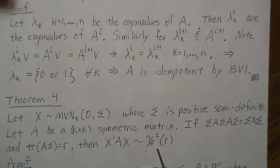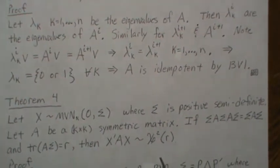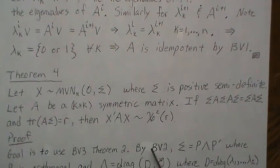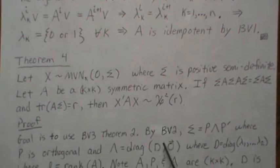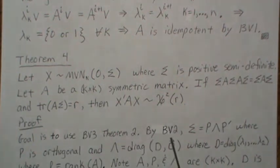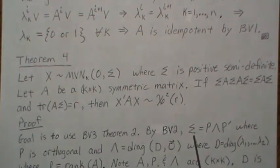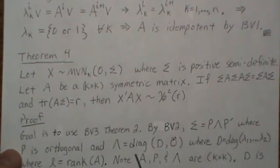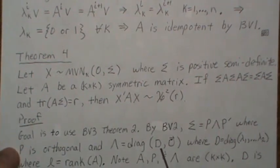One of the goals is to use Theorem 2 from background video 3 to prove this in a very unique way. By background video 2, the spectral decomposition, we can write sigma as P*Lambda*P', where P is an orthogonal matrix and Lambda is a diagonal matrix with D in the upper left and zeros elsewhere.